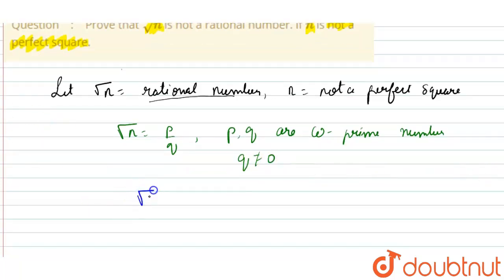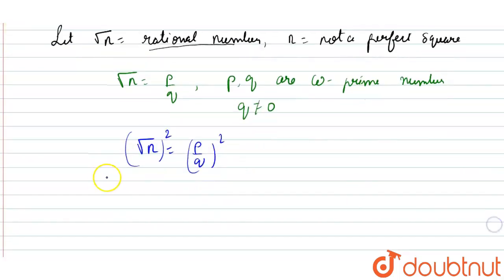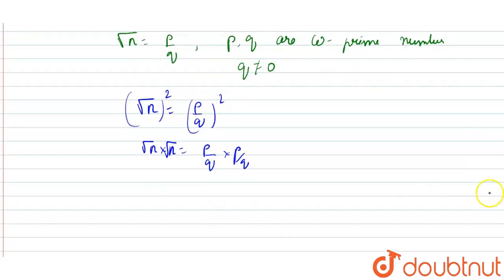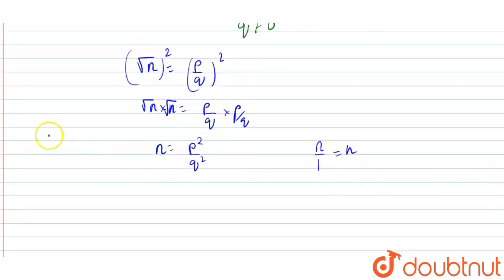Now what I will do is square both sides. √n = p/q, squaring both sides gives: √n × √n = (p/q) × (p/q), so n = p² / q².